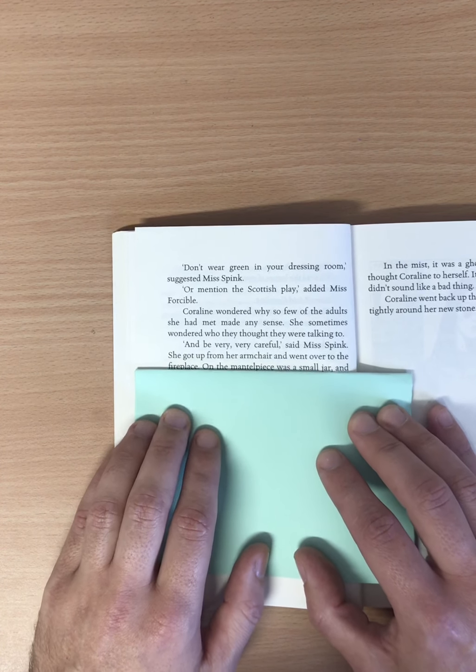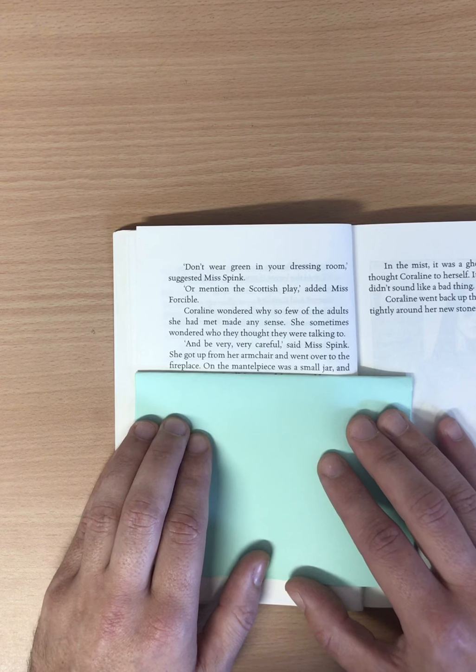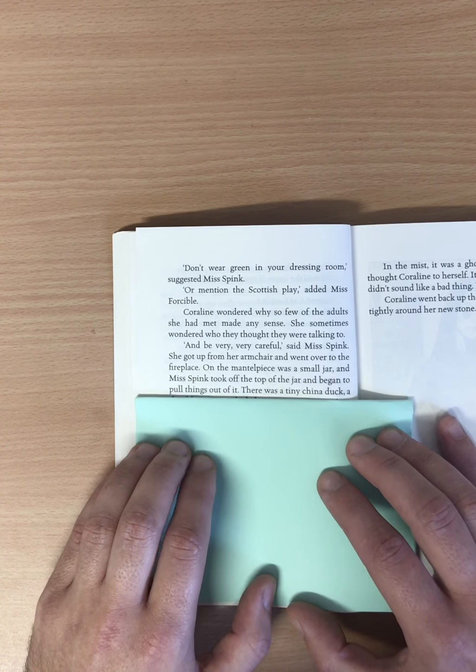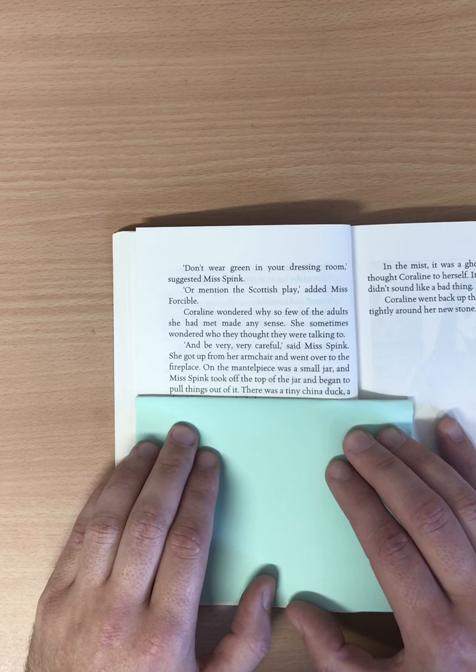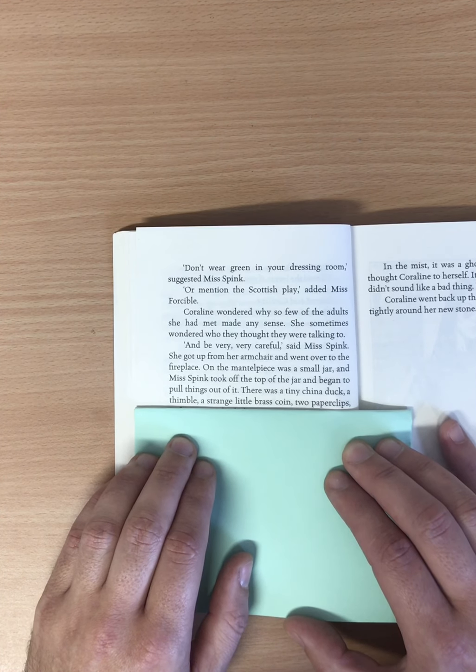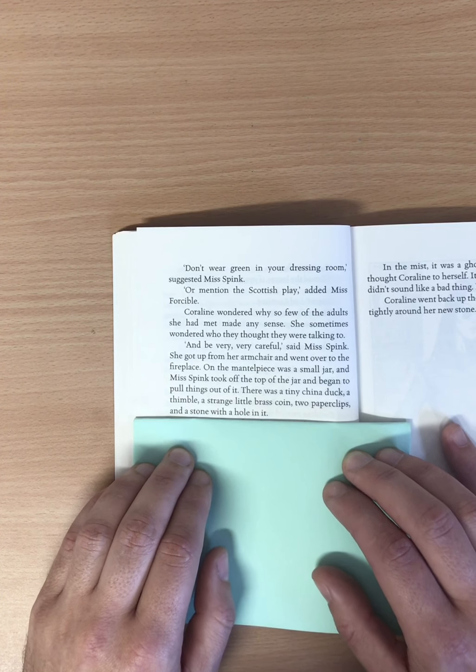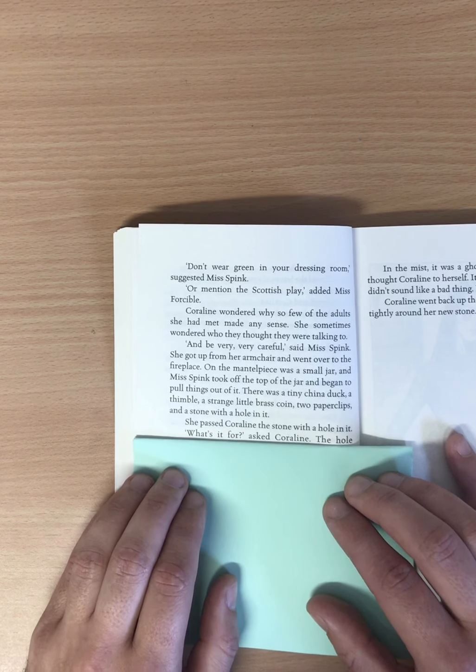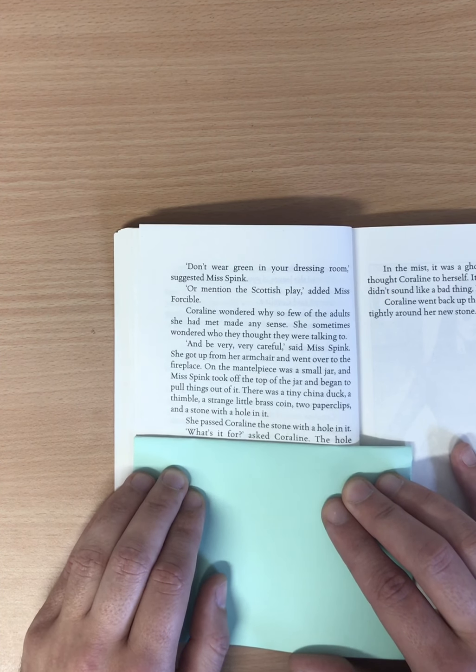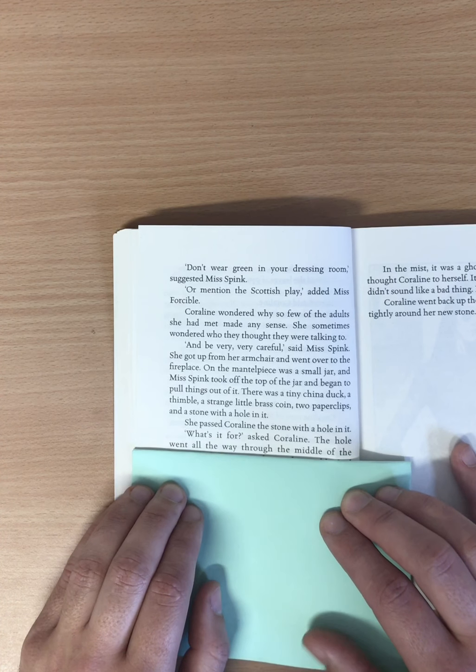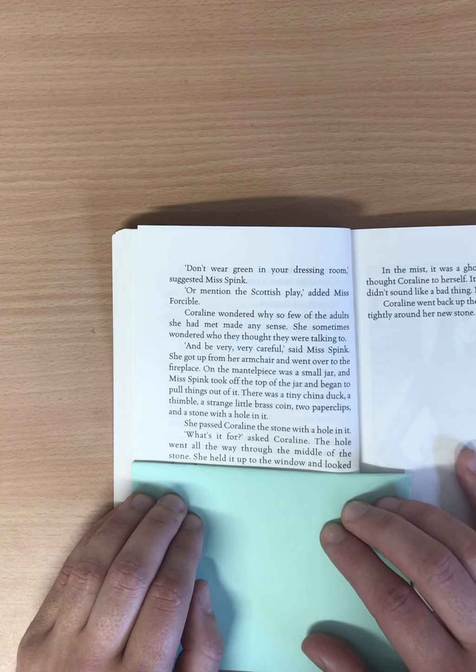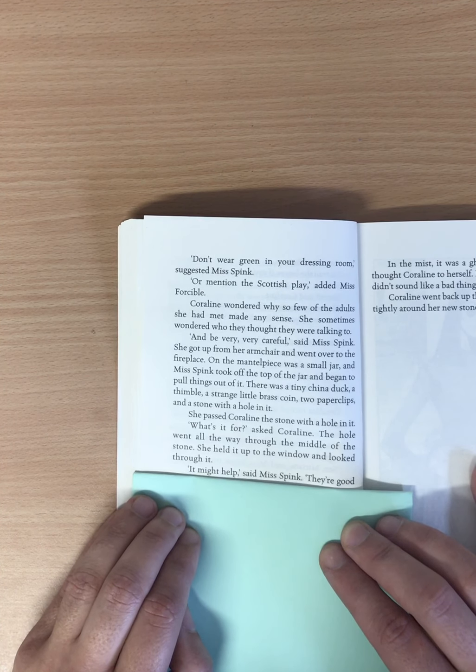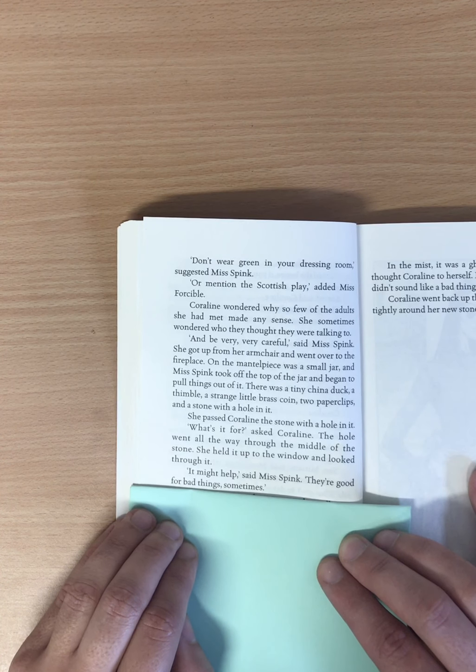She got up from her armchair and went over to the fireplace. On the mantelpiece was a small jar, and Miss Spink took off the top of the jar and began to pull things out of it. There was a tiny china duck, a thimble, a strange little brass coin, two paper clips, and a stone with a hole in it. She passed Coraline the stone with a hole in it. What's it for? asked Coraline. The hole went all the way through the middle of the stone. She held it up to the window and looked through it. It might help, said Miss Spink. They're good for bad things, sometimes.